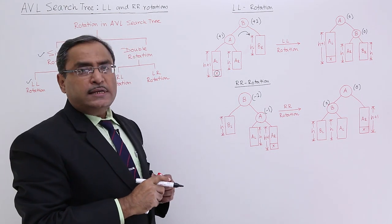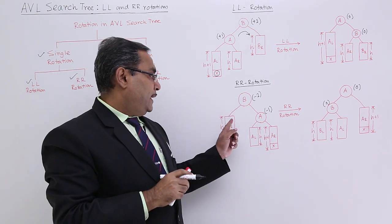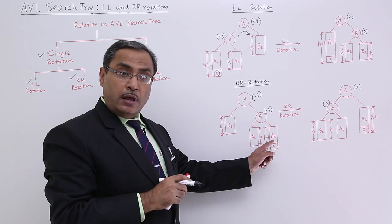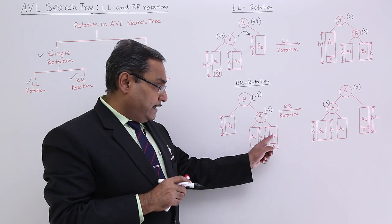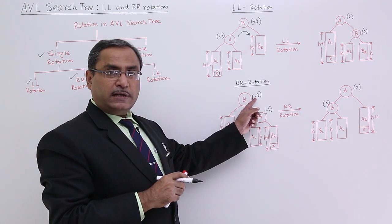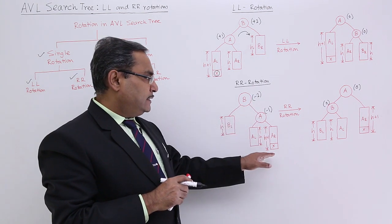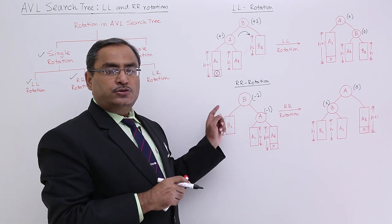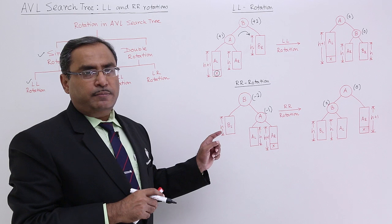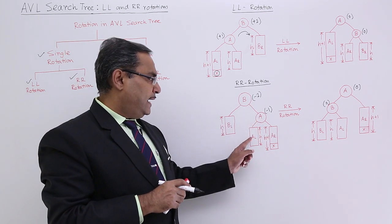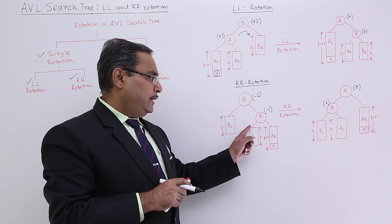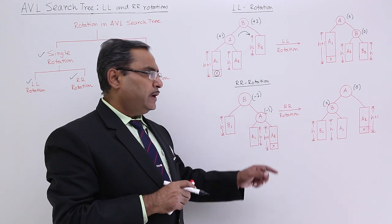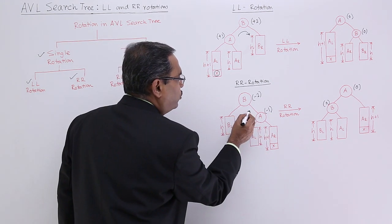Now let us go for RR rotation. What is RR? It is having height H on one side, height H on the other side, but X has got inserted, so its height has become H plus 1. Now the balance factor for the upper node: it is H plus 1 on one side and 1 plus 1 plus H plus 1 gives H plus 3 on the other side, so H plus 1 minus H plus 3 gives minus 2. For the child: 1 plus H and 1 plus H plus 1 gives H plus 2, so H plus 1 minus H plus 2 gives minus 1. So it is disbalanced and requires one rotation.